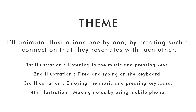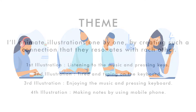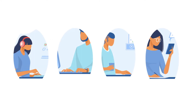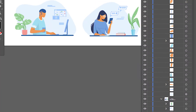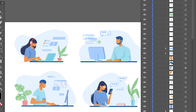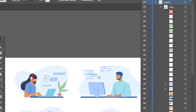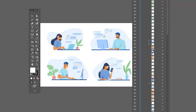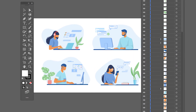This is the theme — I will animate the illustrations one by one by creating such a connection that they resonate with each other. To achieve this, I must add sound according to the behavior of the character and the environment. The sounds link is in the description. First, I separated each illustration into different layers. Everything looks good — let's start the creative process.